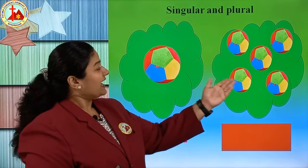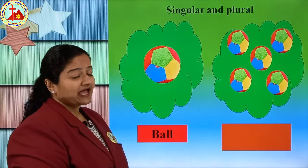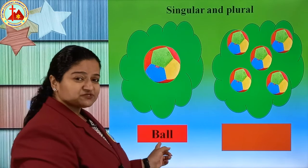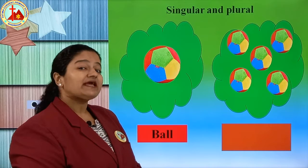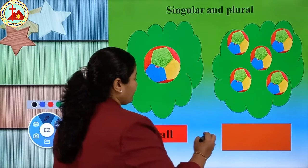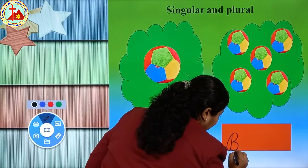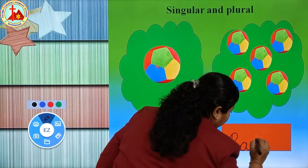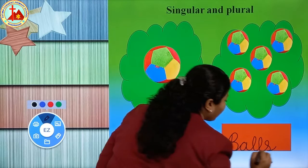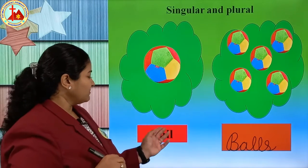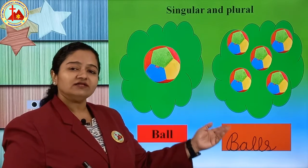One ball and more than one — balls. Same spelling B-A-L-L, ball, and last you add S — B-A-L-L-S, balls. Ball is singular and balls is plural.